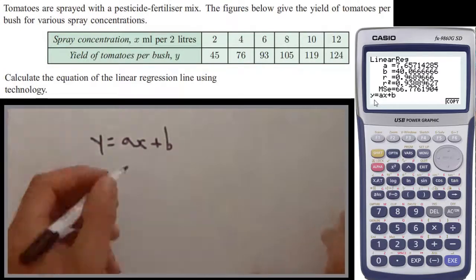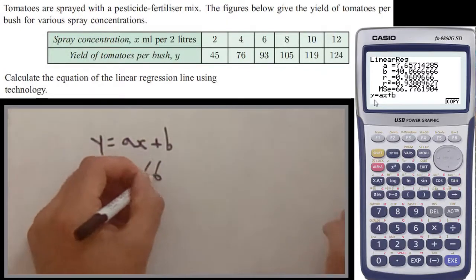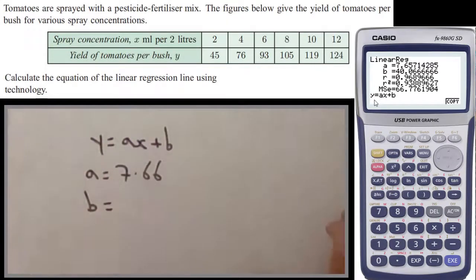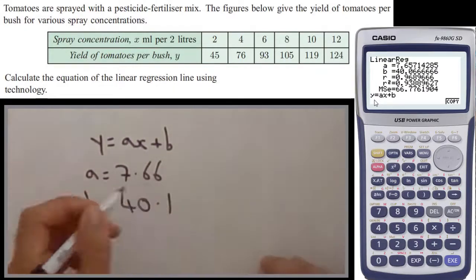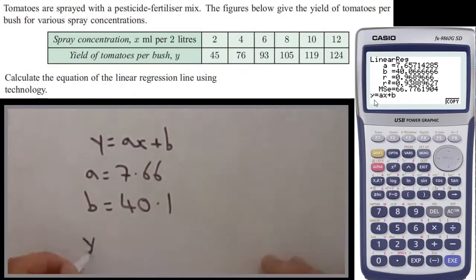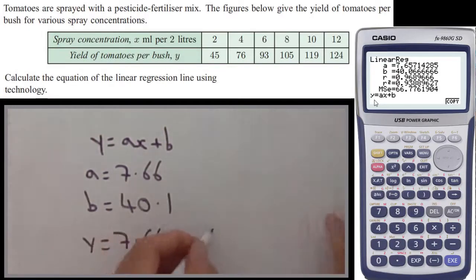Three significant figures, and B equals 40.0666, we'll call that 40.1. Which must mean, well, if Y equals AX plus B, Y equals A, 7.66, X plus B, 40.1.